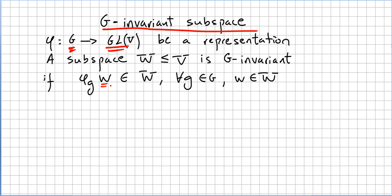So it's the same for representations. If this happens, we say that this subspace W is G-invariant, or invariant for G. So suppose W is a G-invariant subspace.